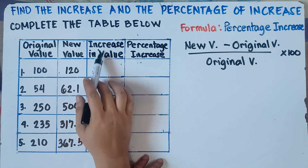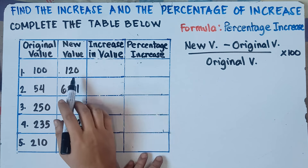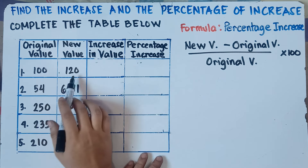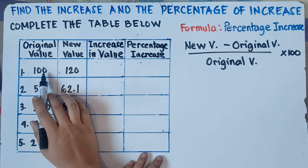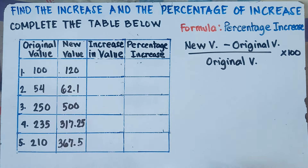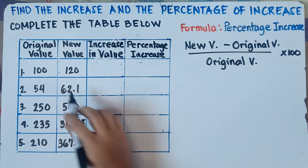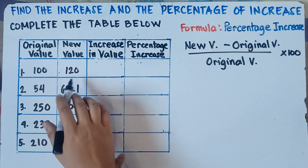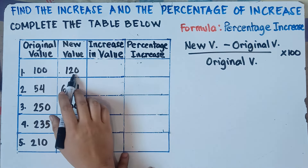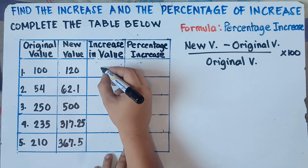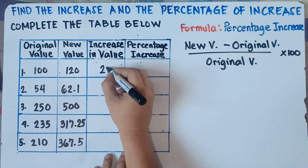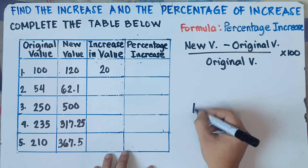To find the increase in value, simply subtract: new value minus original value. So 120 minus 100, that would be 20.